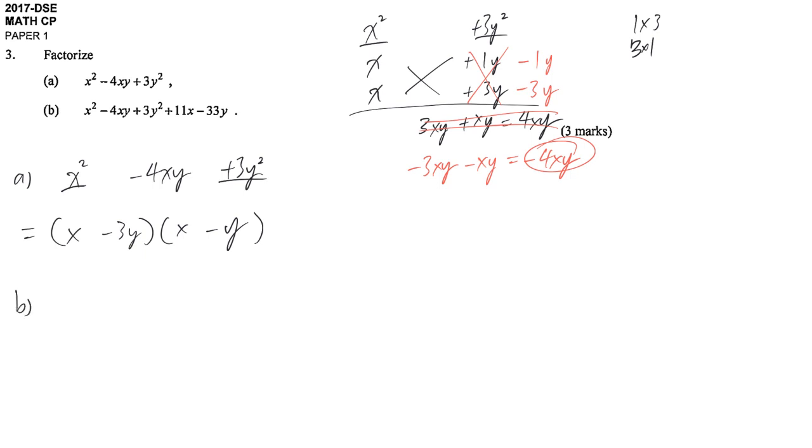Part B. We have x squared minus 4xy plus 3y squared. It's obviously the same as part A. So we put all other things a little bit further away. Left hand side, we just finish once. We don't need to continue: x minus 3y times x minus y.